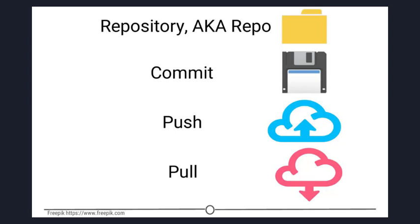Git compares the previous version of all of your files in the repo to the current version and identifies those that have changed since then. Those that have not changed, it maintains the previously stored file untouched. Those that have changed, it compares the files, logs the changes, and uploads the new version of your file.